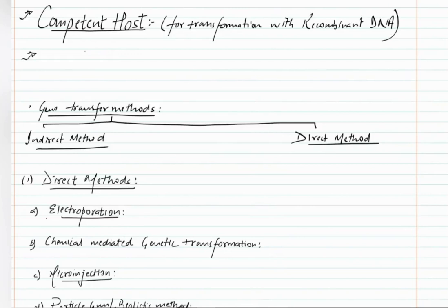Hello everyone, my name is Rahul. In the previous video we had discussed about cloning vectors. In this video we are going to discuss about competent hosts. A competent host means a host which is capable of transformation — transformation means transfer of recombinant DNA to the host. So a host which has the ability to accept this recombinant DNA is a competent host.